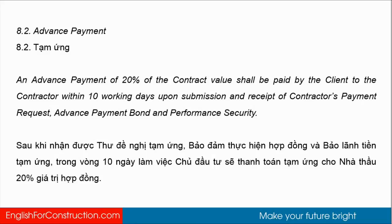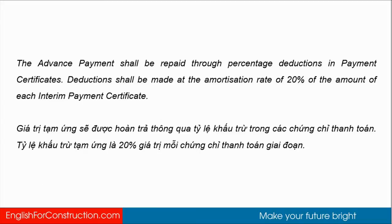8.2 Advanced Payments: An advanced payment of 20% of contract value shall be paid by the client to the contractor within 10 working days upon submission and receipt of the contractor's payment request, advanced payment bond, and performance security. The advanced payment shall be repaid through percentage deductions in payment certificates. Deductions shall be made at the amortization rate of 20% of the amount of each interim payment certificate.